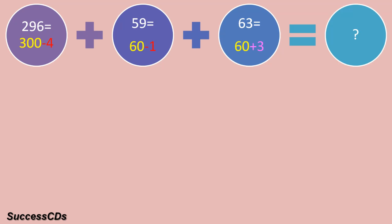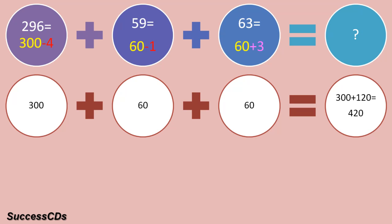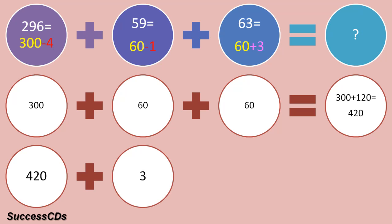Now you have 0 in all the ones places, so adding them up is easier. 300 plus 60 plus 60 — you can add them in your mind — you will get the answer as 420. Now keep 420 in your mind, then see what you had subtracted and added to round off these numbers. You had minus 4 and minus 1, giving minus 5, and plus 3.